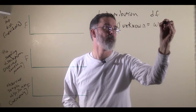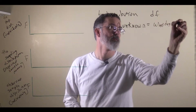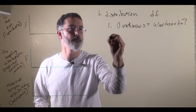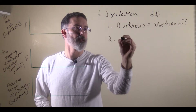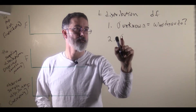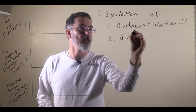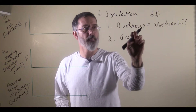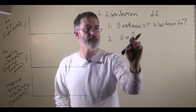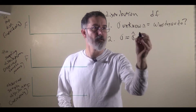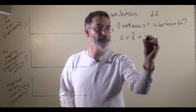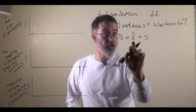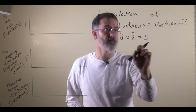Since we do not know our population standard deviation, a reasonable approach is to estimate it. Putting a hat on top of sigma means this is an estimate of sigma. We are going to set our estimate to be our sample standard deviation — our best guess at the population standard deviation.